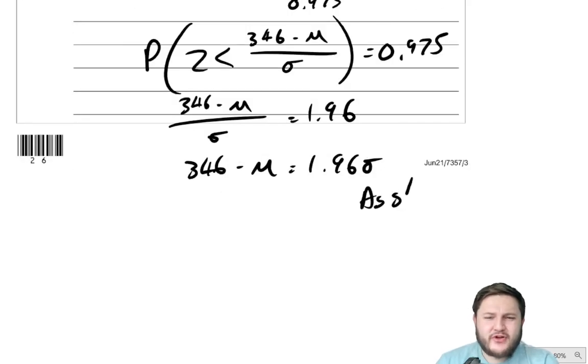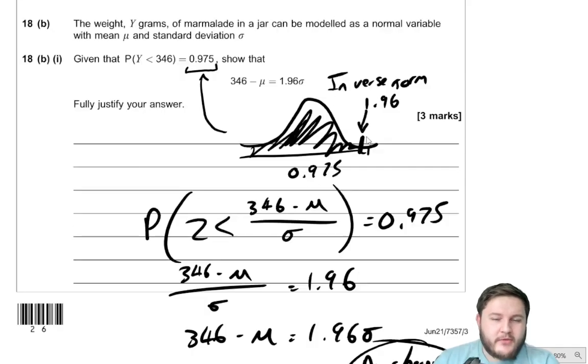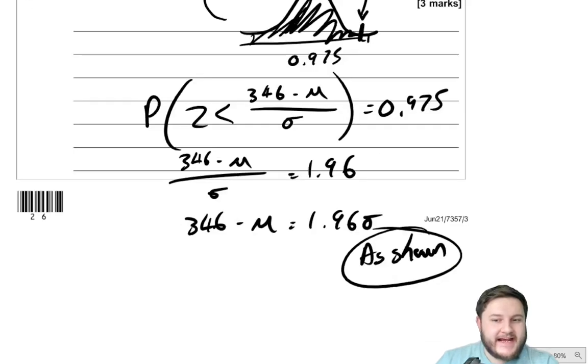So the only really tricky part about this is the modeling bit here, but this realization that you need to do inverse normal to find the critical value of the normal distribution, given that 97.5% of all the data. Like, what is that value that gives you 97.5% of the data? That's kind of a key idea there.